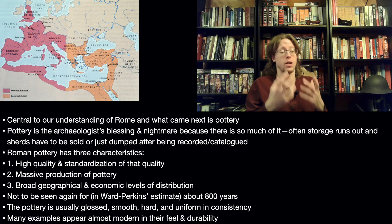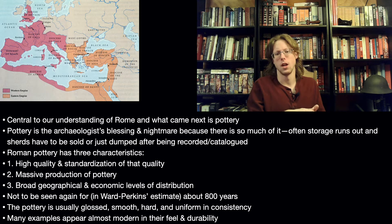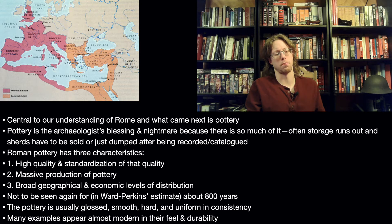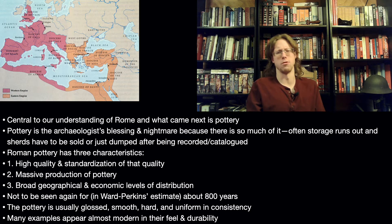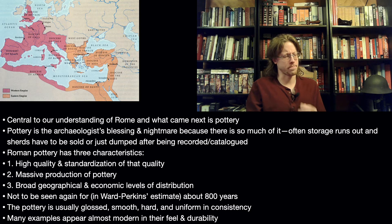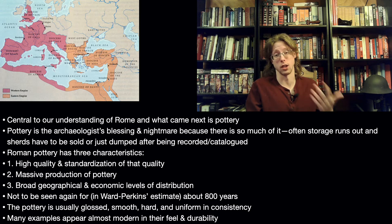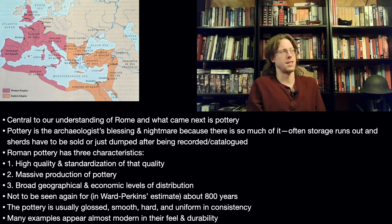Central to our understanding of the Roman economy — and a lot of ancient societies in general — and what came next, is something rather boring: pottery. Pottery is the archaeologist's blessing. They love this stuff, and so do I. It's also a nightmare because there's so much of it. If you are interested in antiquities, you will often find serious ethical problems with trying to collect high-end objects — Norse swords, ancient weaponry, etc. A lot of it comes through the black market and grave robbing. Pottery, generally speaking, is something you can actually collect, especially from the Roman Empire, because there is so much of it — it's basically garbage.